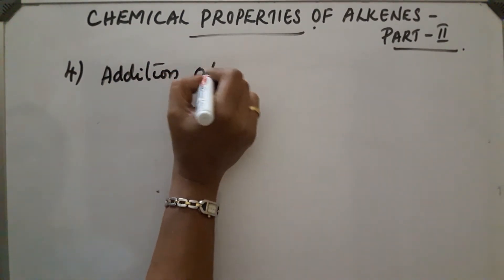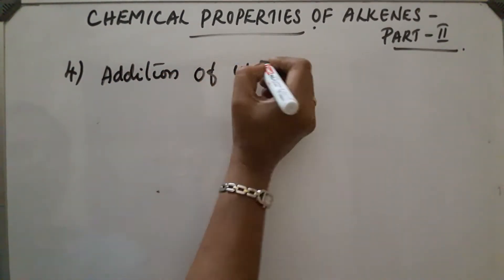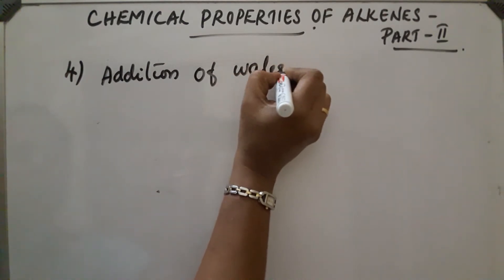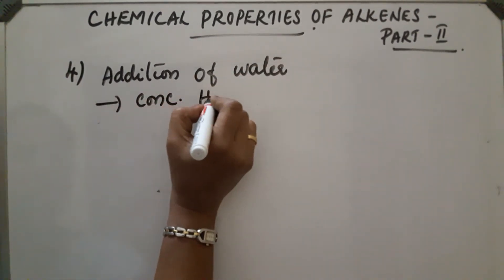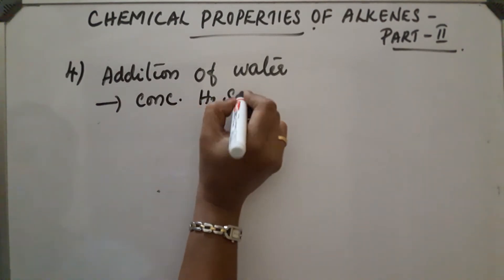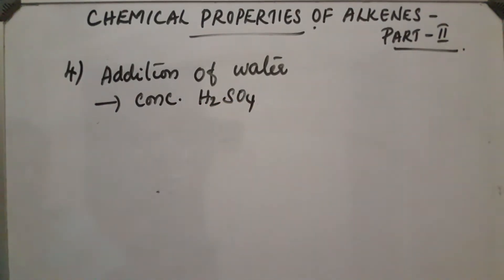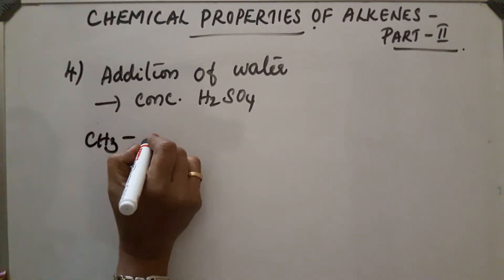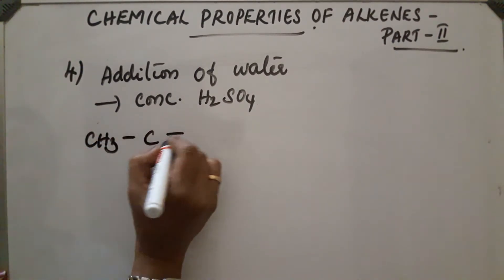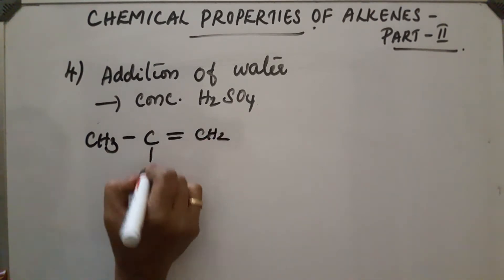The fifth property is addition of water, H₂O. Here the reaction takes place in the presence of a few drops of H₂SO₄ — that is, the reaction takes place under acidic conditions. Here also it follows Markovnikov's rule. Take one example: CH₃–C=CH₂–CH₃.